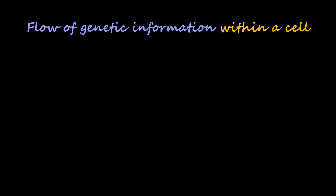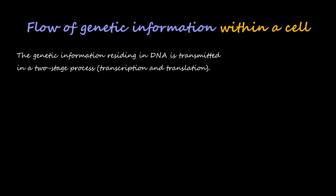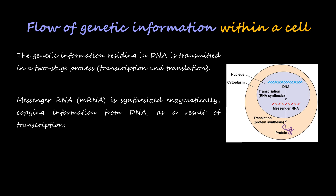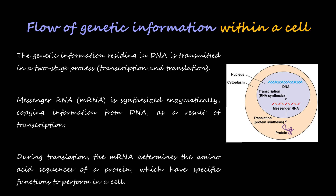How is genetic information transmitted within a cell? The genetic information residing in DNA is transmitted in a two-stage process called transcription and translation. Transcription is the synthesis of RNA, and translation is the synthesis of protein. Messenger RNA is synthesized enzymatically by copying information from DNA during transcription. During translation, the mRNA determines the amino acid sequence of a protein, which performs specific functions in the cell. We will be talking about DNA replication, transcription, and translation in detail in the upcoming videos.